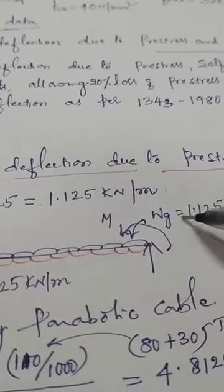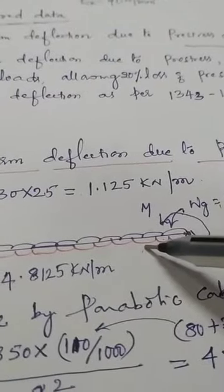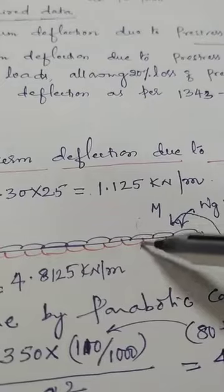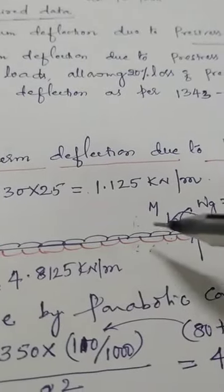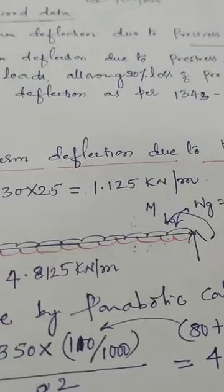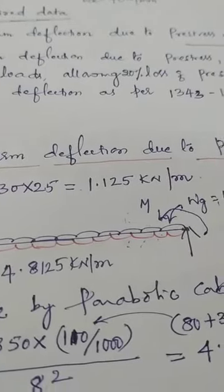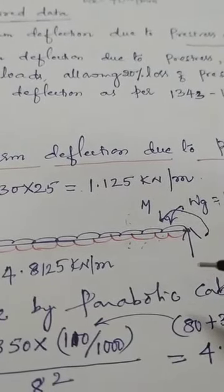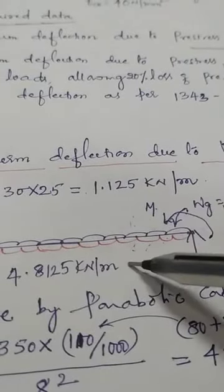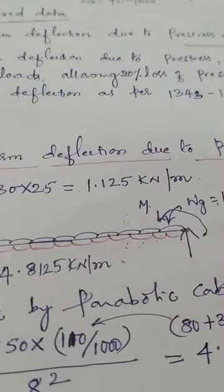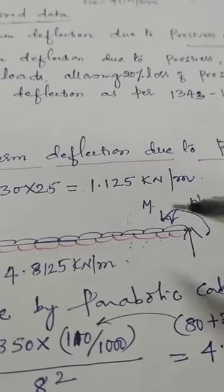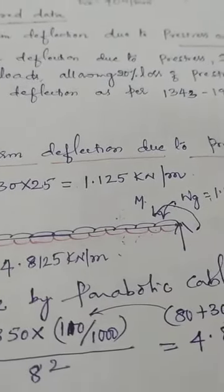The self-weight is a downward UDL and Wc is an upward UDL. These are not combined because the deflection due to dead load is needed separately from the deflection due to prestress. Deflection due to prestress is due to M and Wc, while deflection due to dead weight is calculated separately.